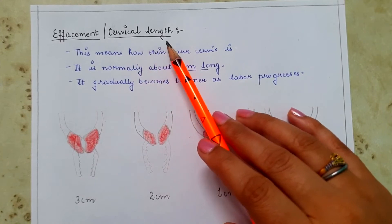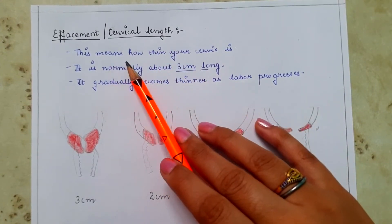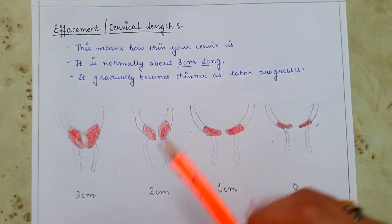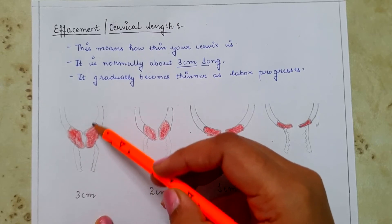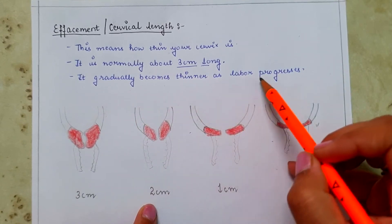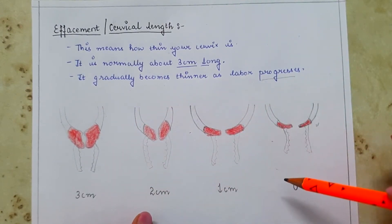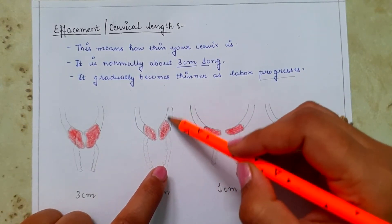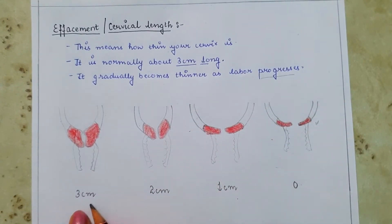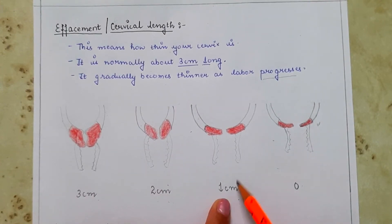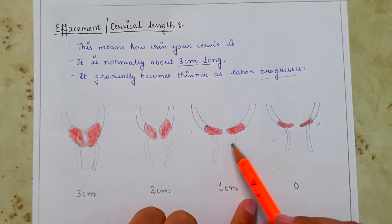Effacement or cervical length is measured in centimeters — it reflects how thin the cervix is. Normally the cervix is about 3 centimeters long. With the progression of labor, the cervix slowly becomes thinner and is pulled upward. Here you can see the cervix at 3 cm, then 2 cm, then 1 cm as labor progresses.